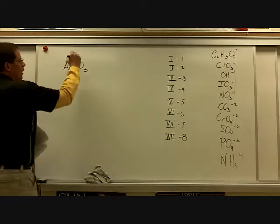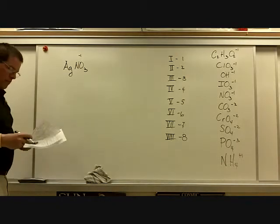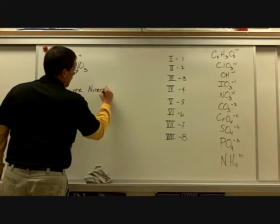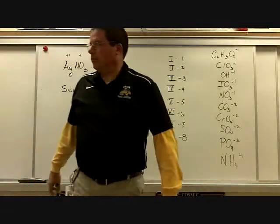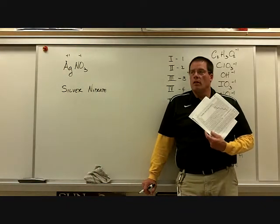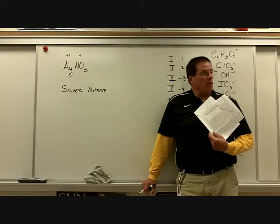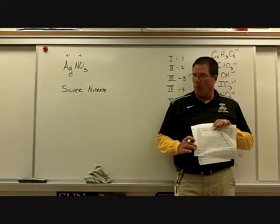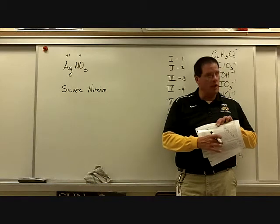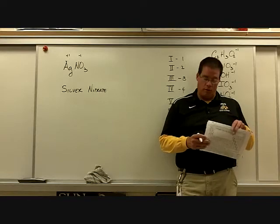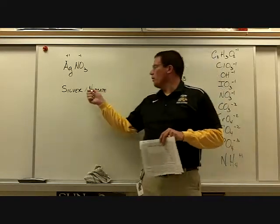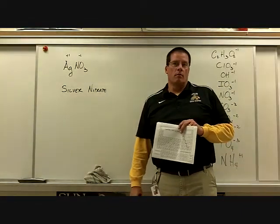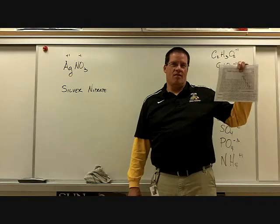AgNO₃ — silver nitrate. The charge on nitrate is negative-1, and silver has a plus-1 charge. But look at your periodic table — how many oxidation numbers does silver have? Just one — a single oxidation number. Everybody who knows chemistry knows silver has a plus-1 charge, so no Roman numeral is needed. It's just like group 1A, 2A, and 3A metals — if it only has one oxidation number, we don't need to specify it. Just silver nitrate.